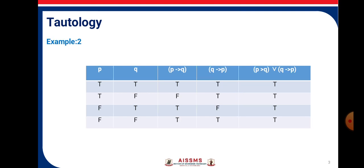Consider another example. P has the truth values T, T, F, F and Q has the truth values T, F, T, F. P implies Q gives us T, F, T, T. Q implies P gives the truth values T, T, F, T. When we perform the OR operation — that is, the disjunction of (P implies Q) and (Q implies P) — we get T, T, T, T. As we get all the truth values as T, T, T, T, it is tautology.